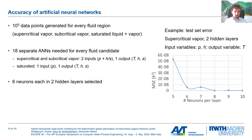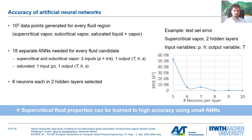Regarding the accuracy of the neural networks, we generated 10^5 data points for each working fluid and each region: supercritical vapor, subcritical vapor, and saturated liquid and vapor. In total, we trained 18 separate neural networks for each working fluid candidate. We found that an architecture with six neurons in two hidden layers works well, as illustrated on the right-hand side showing mean squared error versus number of neurons per layer. Six neurons gives relatively low mean squared errors while keeping problem complexity manageable for optimization. We find that supercritical fluid properties can be learned to high accuracy using relatively small neural networks.